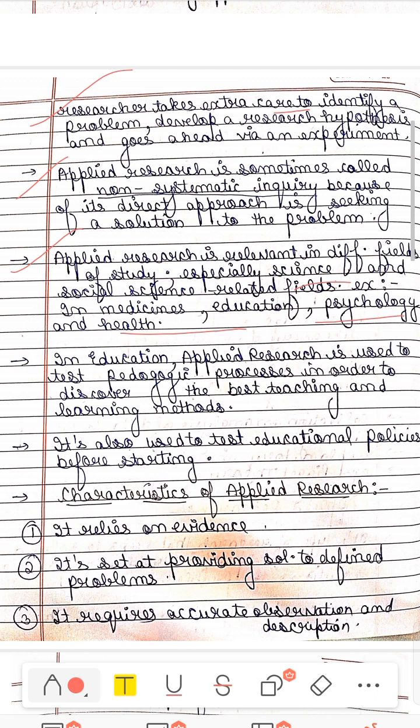You are a psychologist and you have some guidance and counseling. He observed it. After observing it, he did a little research, he made his hypothesis, and he analyzed it, and he gave it a final result. So this will be applied. Then in education, applied research is used to test pedagogical processes in order to discover the best teaching and learning methods. In education field, when pedagogical things are available, how we can bring the best methods, how we have to make the best teaching, we apply it. This is also used to test educational policies before starting. Educational policies have been introduced before introducing people to apply it and see where the work is or not.